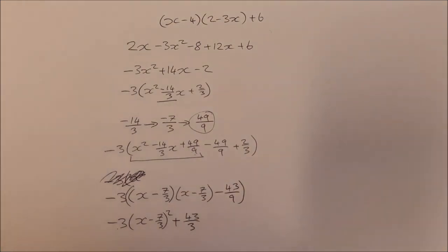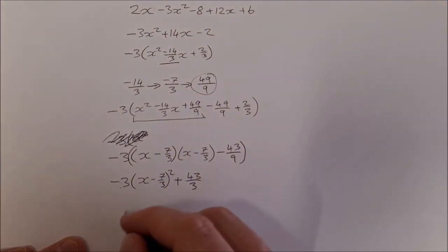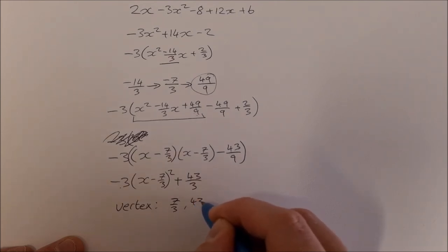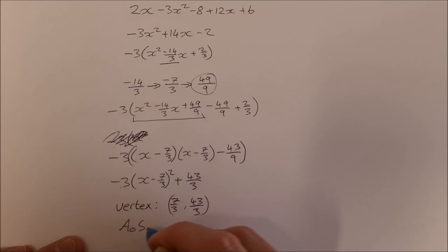So here in this one, our vertex is 7 over 3, 43 over 3, and our axis of symmetry is x equal to 7 over 3.